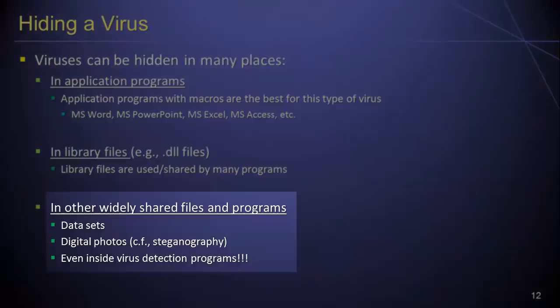Other widely shared files and programs may also be good targets for a virus. It's possible, for example, for a virus to be hidden inside of a data set that is shared by many users, thus allowing the virus to spread quickly. Another interesting place to hide malicious code is inside digital images, such as JPEG files. There is, in fact, an entire science known as steganography, which examines how information can be concealed, and many methods and tools have been developed which allow malicious code to be secretly hidden inside common types of computer files.